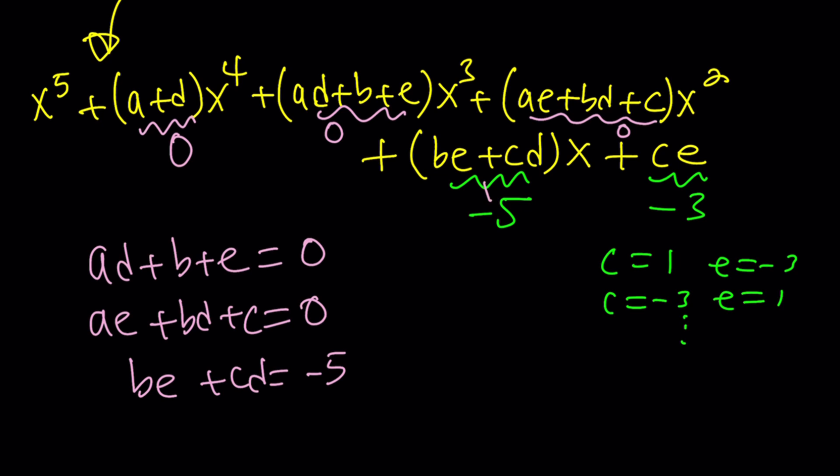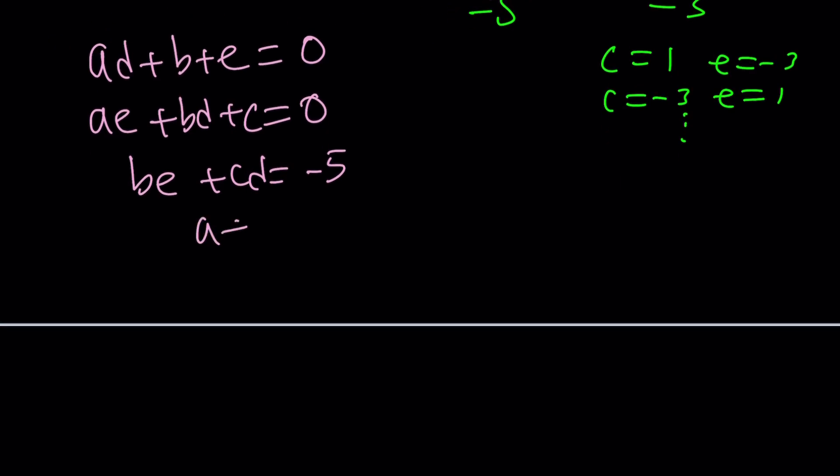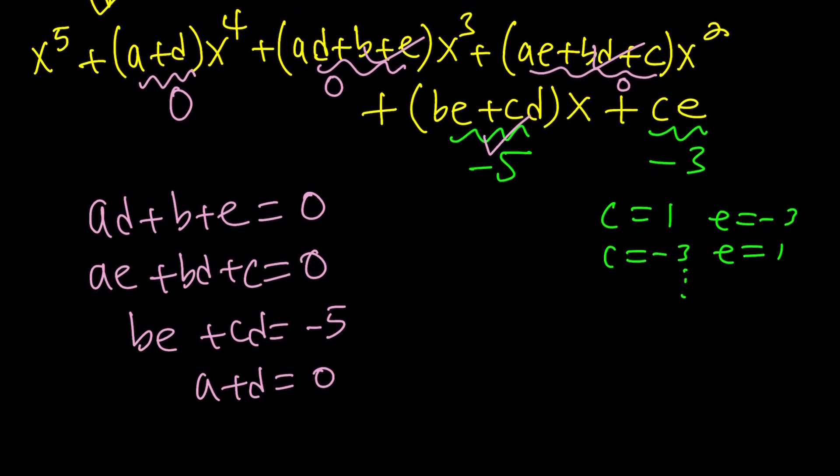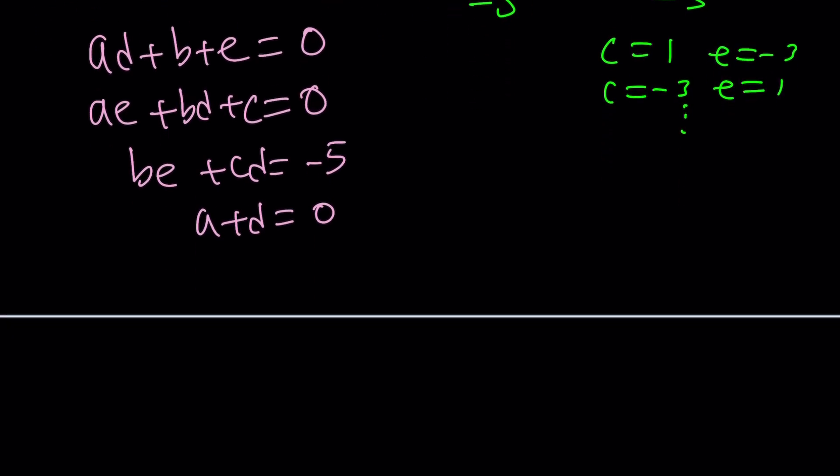Maybe next, I'm going to use be plus cd equals negative five. So I use this, this, and this. And the next one is going to be a plus d equals zero, because there's no x to the fourth. And finally, ce equals negative three. Great. So that's my system of equations, and good luck solving it.